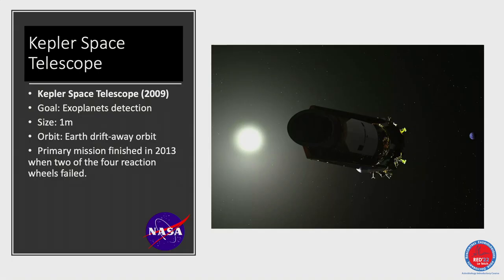Kepler revolutionized the field by detecting about 4,800 planets. It was dedicated solely to detecting exoplanets via the transit method, with about a one-meter mirror. The primary mission ended in 2014 when two of the four reaction wheels broke. But Kepler remained active until 2018 as K2.